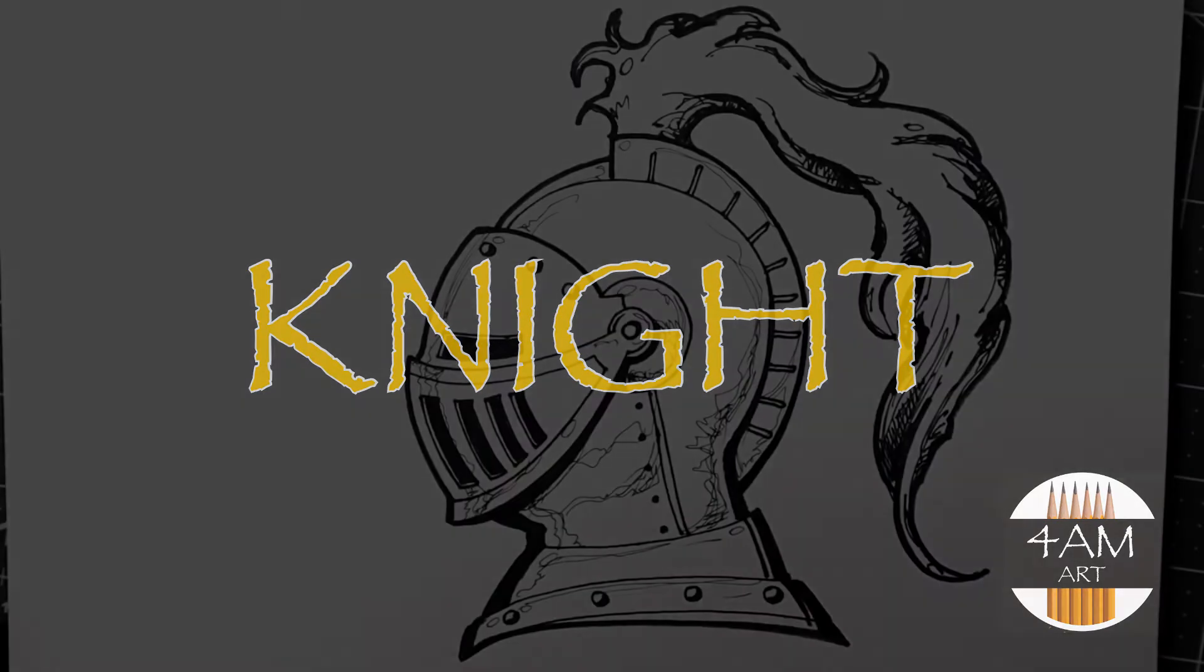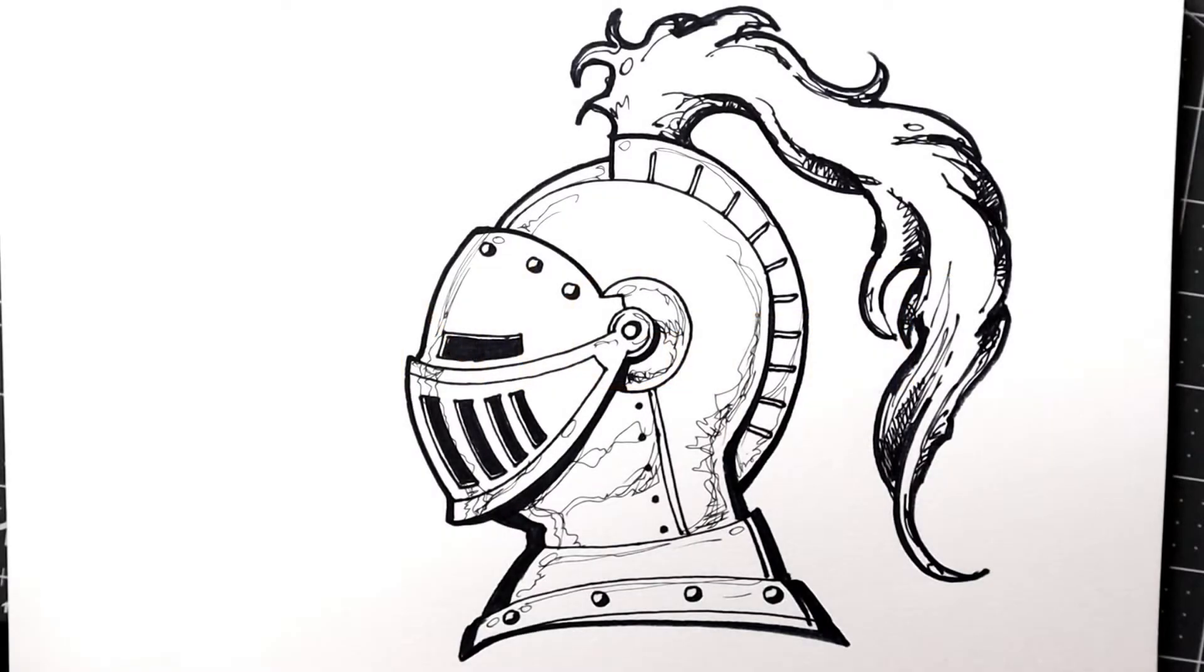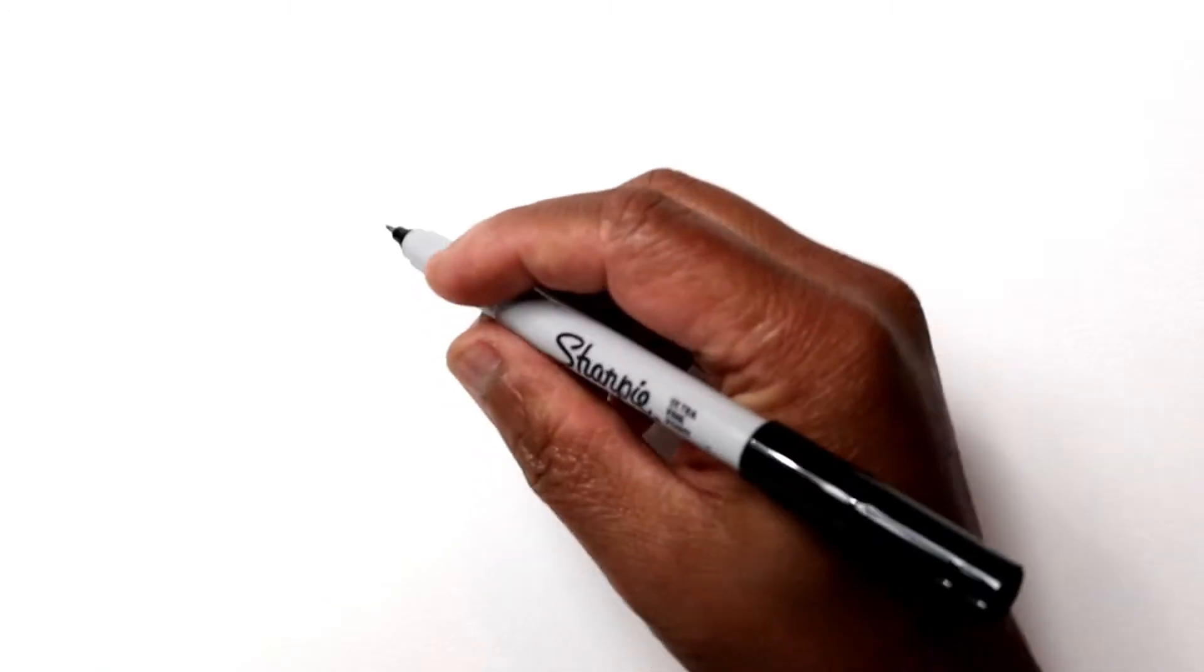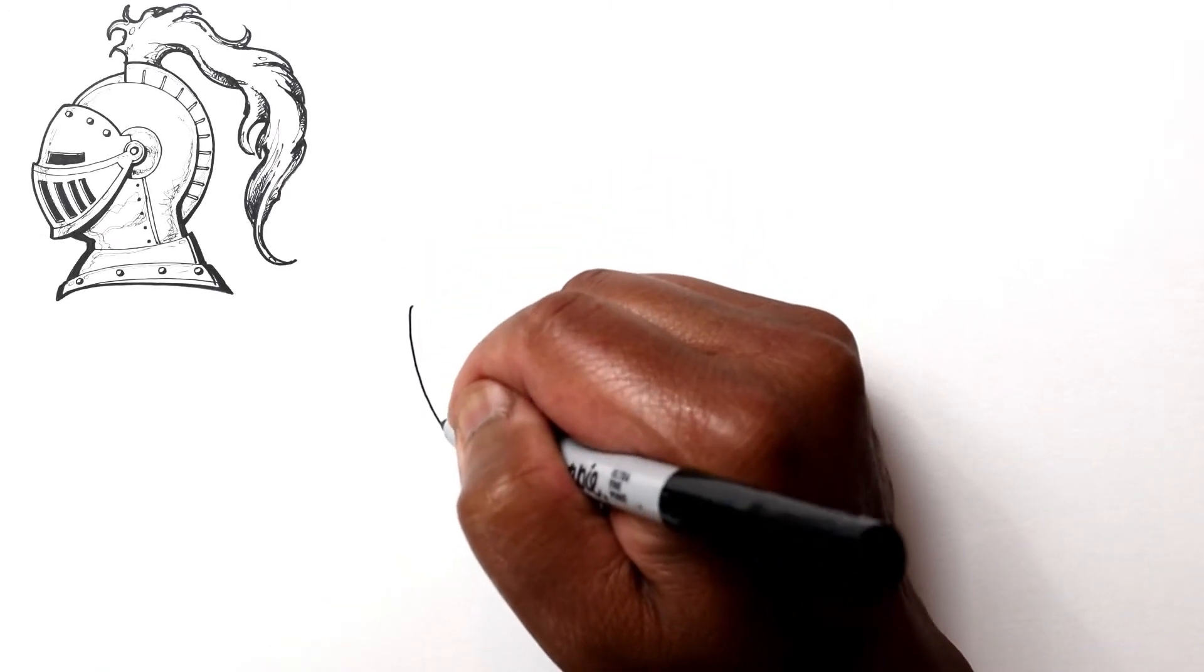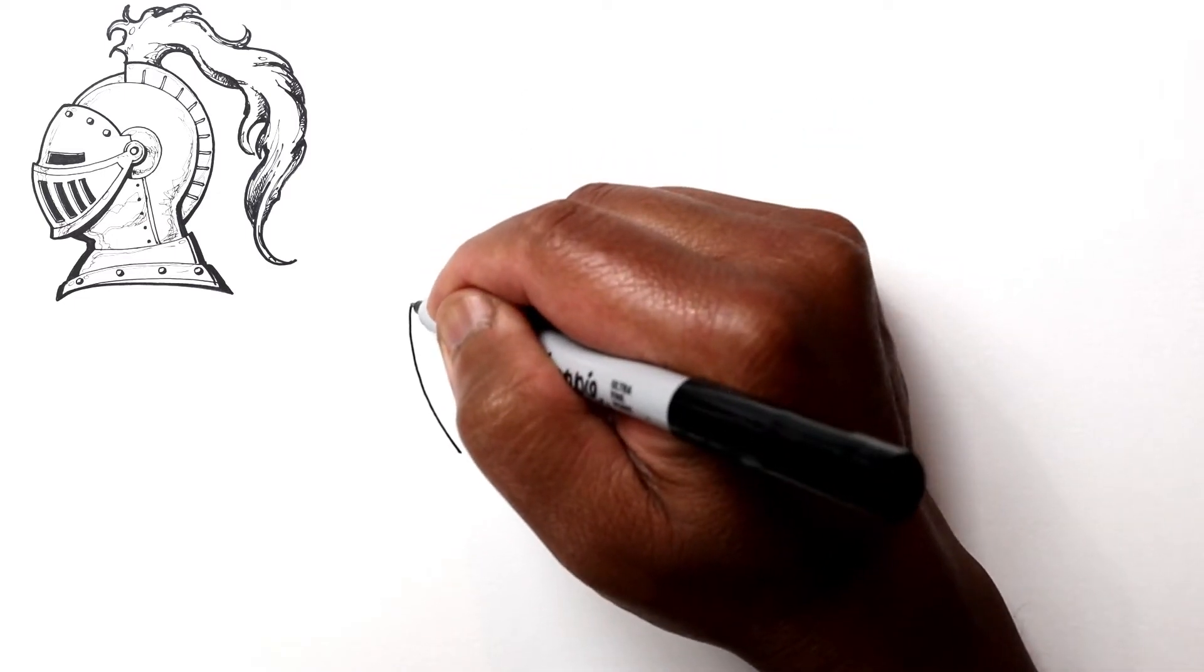Hello everyone, Justin here, and today let's draw a simple knight helmet. Let's start with a curve at the front of his helmet. This is gonna be his face guard.